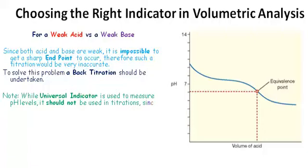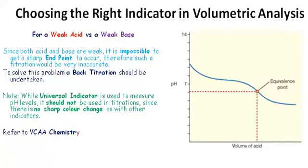Note that while universal indicator is used to measure pH levels, it should not be used in titrations since there is no sharp color change as with other indicators.